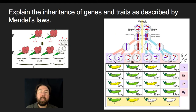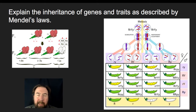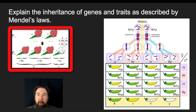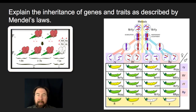This brings us to Mendel's laws. We're going to explain how inheritance of genes and traits is described by Mendel's laws, which generally fit into three categories. The first is the law of dominance — the idea that when there are two alleles, some alleles are going to be expressed as long as they are present, and we refer to those as dominant, while others are expressed only when the non-dominant allele is present.